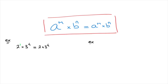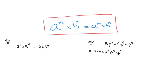Another example of where this rule comes in handy: say we were asked to simplify 3p to the power of 2 times 4q to the power of 4 times p to the power of 5. To simplify this, all of the terms are being multiplied. Since multiplication is commutative — meaning we can change the order — we can rewrite this as 3 times 4 times p to the power of 2 times p to the power of 5 times q to the power of 4, grouping the numbers and like terms side by side.